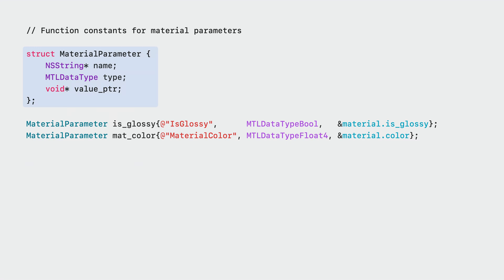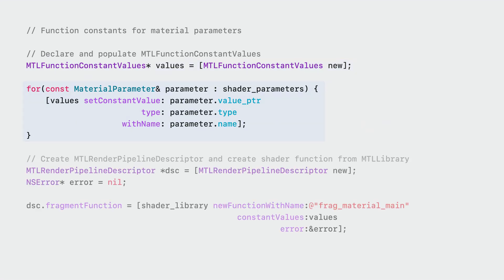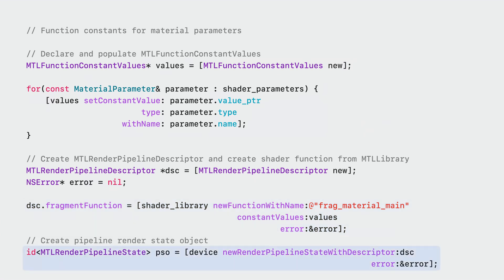The material parameter structure can be used to represent all parameters that are constant for a material. For example, is_glossy is a boolean material feature flag controlling glossiness, and material color is a vector parameter used to describe color. To create a specialized pipeline state object, iterate over a Metal function constant value set and insert the values using set_constant_value. Then create a render pipeline as usual. The only difference is when creating the fragment function, you use the variant new_function_with_name_with_constant_values. Finally, create your pipeline state object. The resulting shader is the most optimal performing variant of this material.